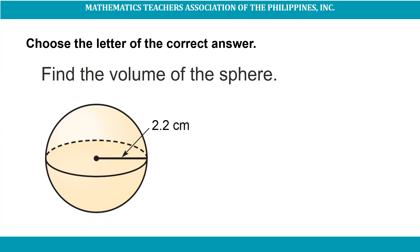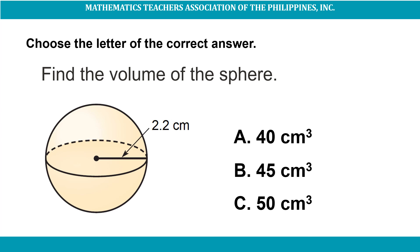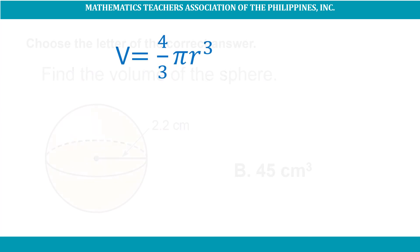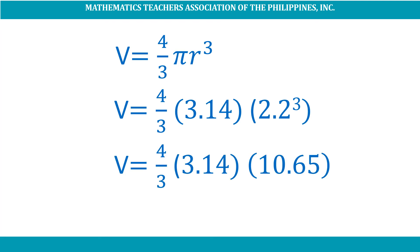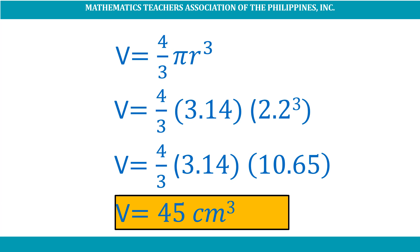Let's solve for the volume of this sphere given its radius of 2.2 centimeters. Here are your choices. A. 40 cubic centimeters. B. 45 cubic centimeters. C. 50 cubic centimeters. Yes, it's letter B, 45 cubic centimeters. Using the formula V = (4/3)πr³: V = (4/3) × 3.14 × 2.2³ = (4/3) × 3.14 × 10.65. The volume of the sphere is 45 cubic centimeters.